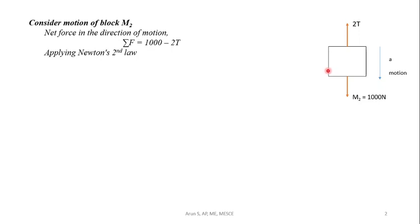Applying Newton's second law, F equals ma. The net force 1000 minus 2T equals mass times acceleration: 1000 divided by 9.81 times A. This is equation number 1.